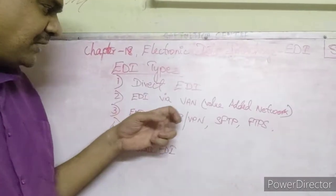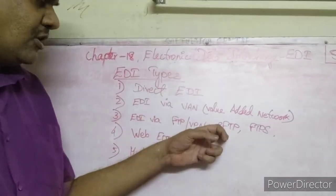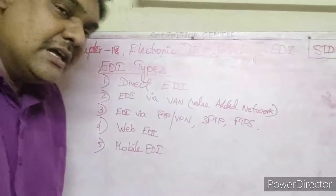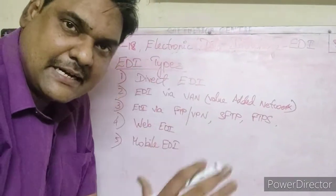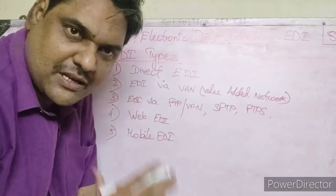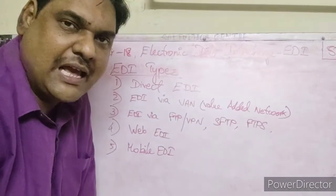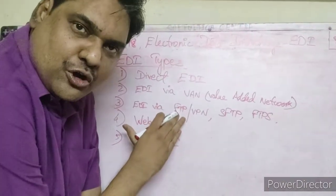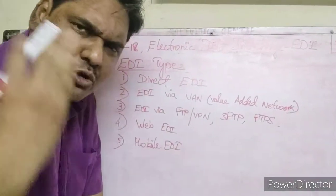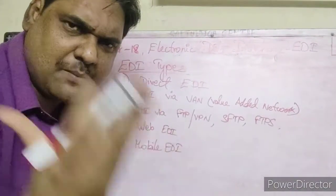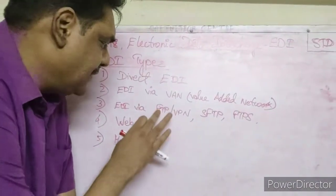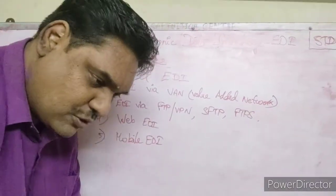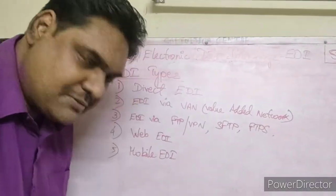Next, EDI via FTP or VPN or SFTP or FTPS. In this type, the EDI documents are transmitted using an internet connection. FTP is one of the protocols. There are many protocols — HTTP, HTTPS, FTP. FTP stands for File Transfer Protocol. The internet connection is used via the File Transfer Protocol.